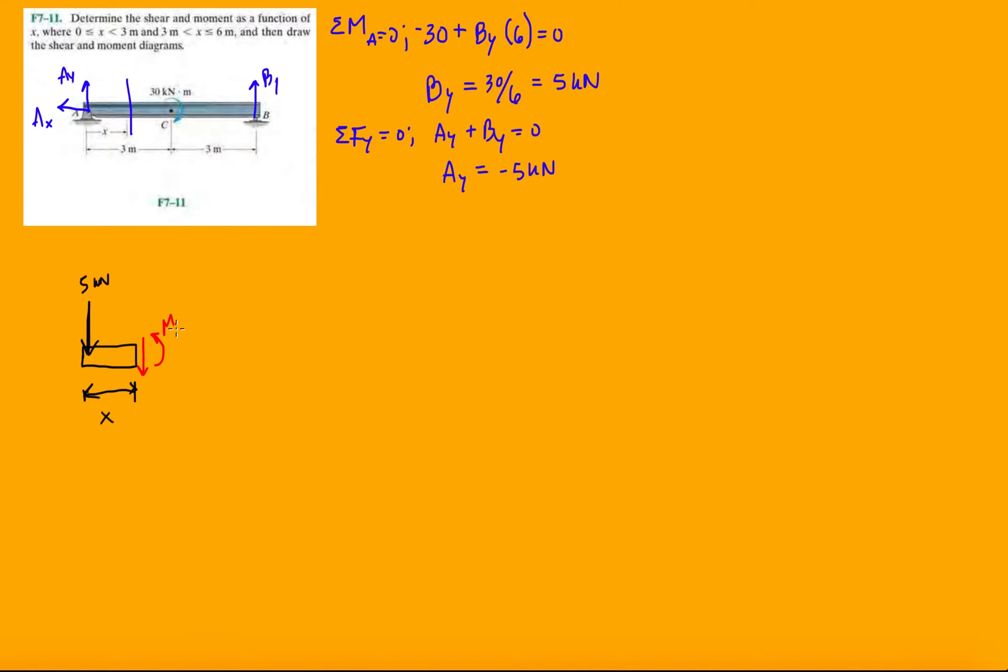And then I got to draw my internal forces and moments, so M1 and V1. And then don't forget to add this in each cut. These functions that we're going to find are going to describe the beam from 0 to 3, a little bit before 3, 2.99999.